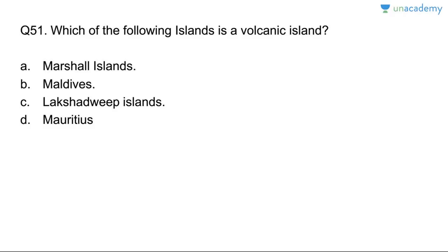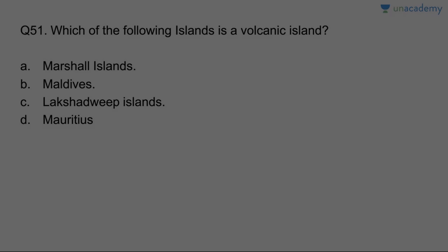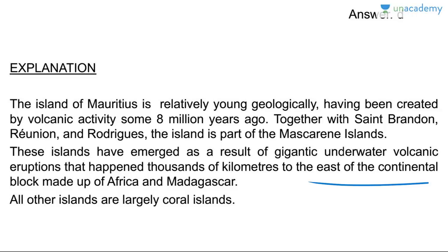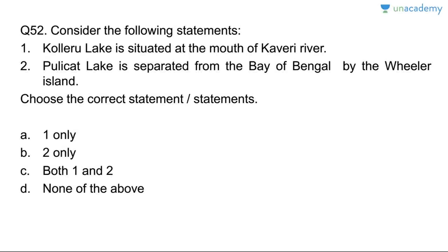Question fifty-one: which island is a volcanic island? Mauritius is a relatively young, geologically volcanic island, created about eight million years ago. Together with Saint Brandon, Réunion, and Rodrigues, it is part of the Mascarene Islands. These islands emerged from gigantic underwater volcanic eruptions that happened thousands of kilometers east of the continental block of Africa and Madagascar. All other islands mentioned are largely coral islands.